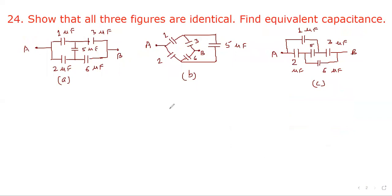Now consider next question. Show that all three figures are identical and find equivalent capacitance. We have 1, 3, 2, 6 microfarad capacitors. This is case of balanced bridge. Suppose case of resistance, this is p, this is q, this is r, and this is s.